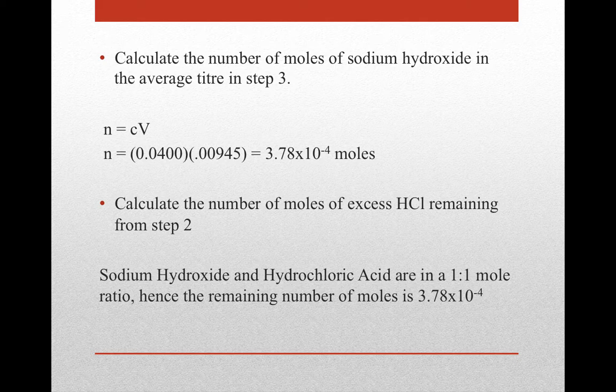This is the back titration process: we start with excess hydrochloric acid, react all the ammonia with it, and have some HCl left over. We then titrate that excess with sodium hydroxide. The 1:1 mole ratio tells us we have that much HCl remaining from step 3.